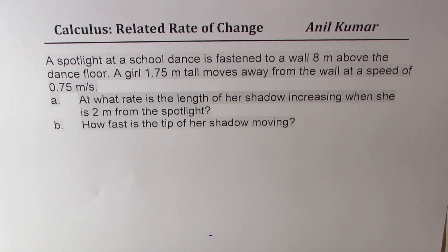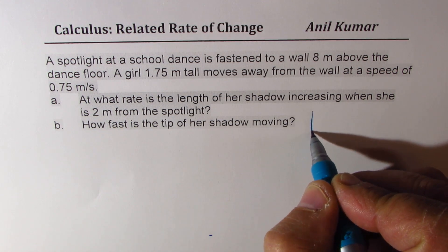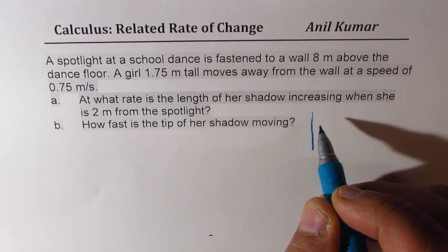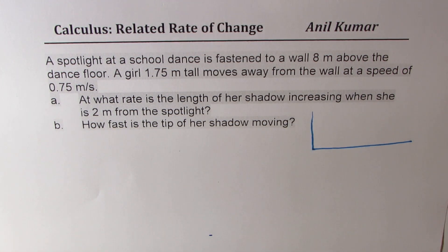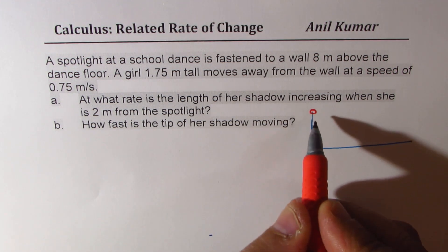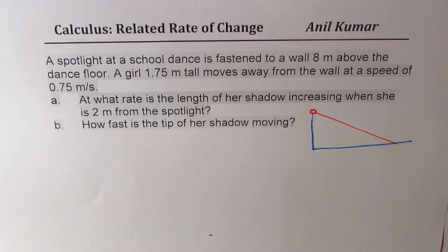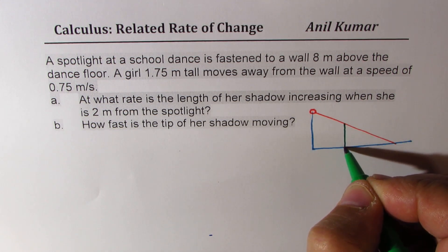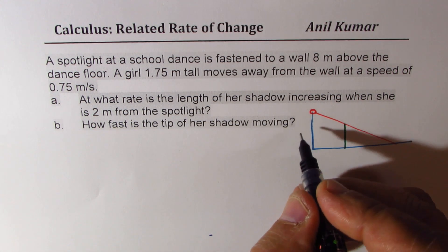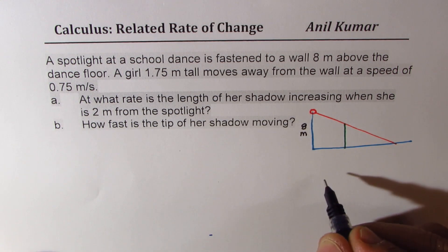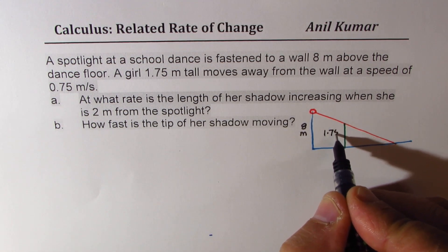We will begin by making a small sketch. Let's say this is the wall — 8 m — and that is the floor, with the girl dancing somewhere in between. There is a spotlight. Let me draw a line indicating the shadow and put the girl at this position. From the given scenario, we know the spotlight on the wall is 8 m and the height of the girl is 1.75 m.